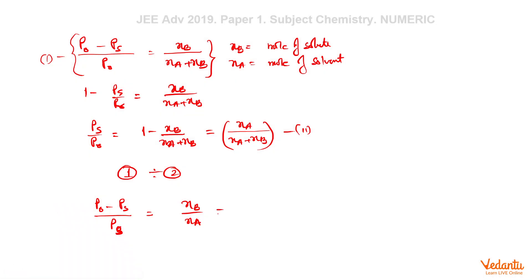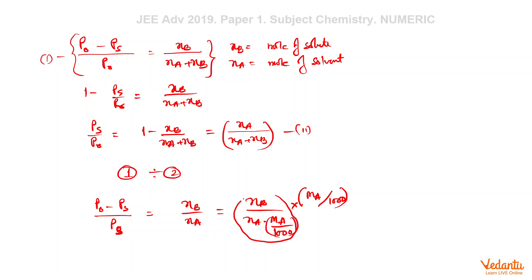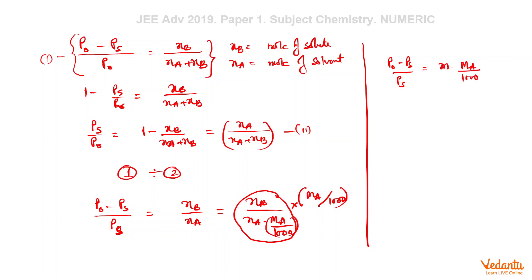This equation can be further simplified. Nb upon Na can be written as Nb upon Na multiplied by Ma divided by 1000, where Ma is the molecular mass of the solvent. Multiplying and dividing by Ma over 1000, this quantity becomes molality. So (P0 minus PS) / PS equals small m times Ma, where Ma is the solvent's molecular mass divided by 1000.